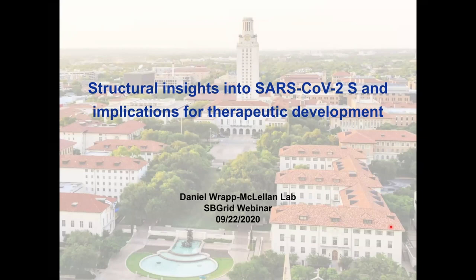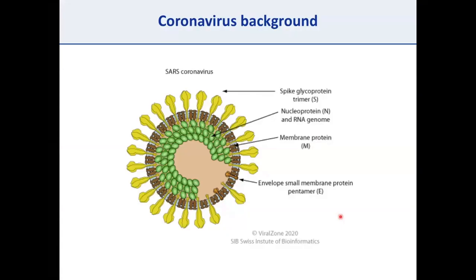Thank you for having me. My name is Daniel Rapp, a PhD candidate in Jason McClellan's lab at UT Austin. Today I'll be telling you about work we've been doing over the past nine months to structurally characterize the SARS-CoV-2 spike protein, and what our findings might mean for therapeutic development and vaccine design.